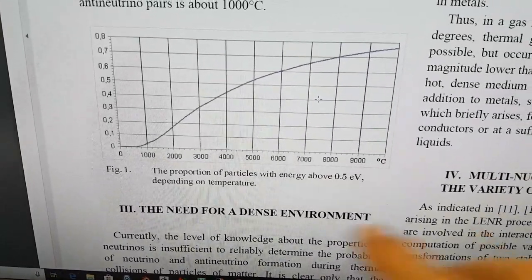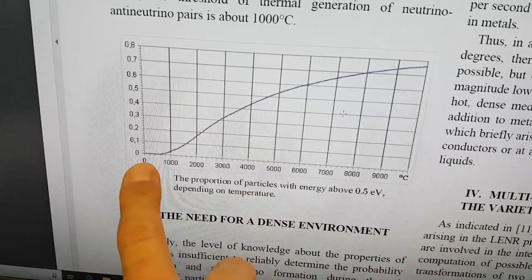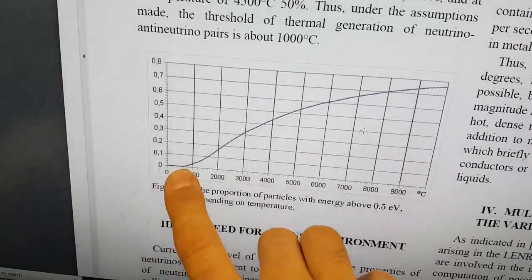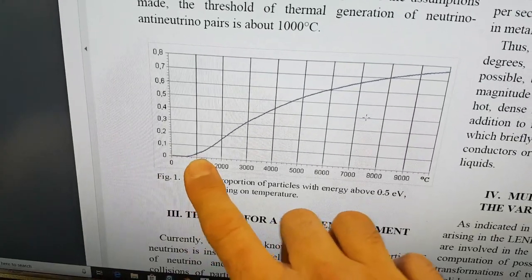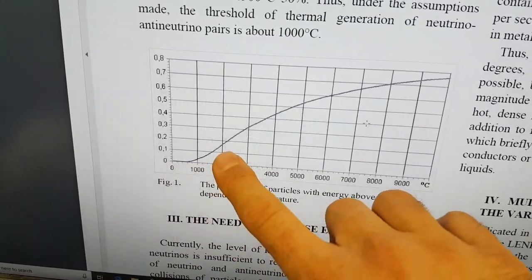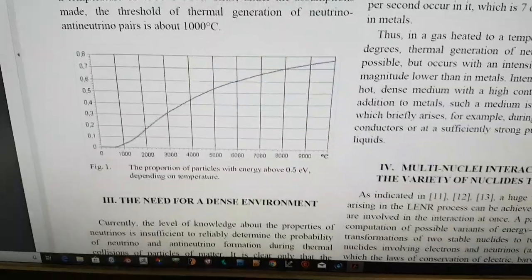Interesting, because we thought the Lion reactor was only going just over 800 degrees, but in fact it was going about 1,050, 1,080 degrees. This is the proportion of particles with an energy above 0.5 eV, depending on temperature.